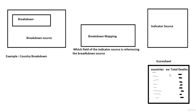How do we know that Afghanistan will have the result 10 or 100 or whatever the number? The way we get that number is by creating a breakdown mapping. We create a breakdown mapping and say: here is the breakdown source with the list of countries and their sys_ids — now use those sys_ids in the indicator source.